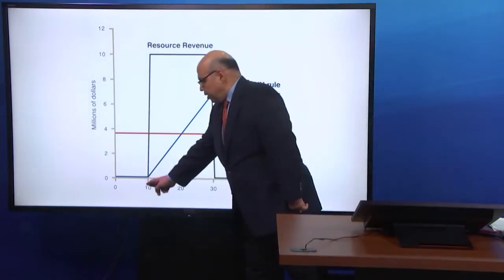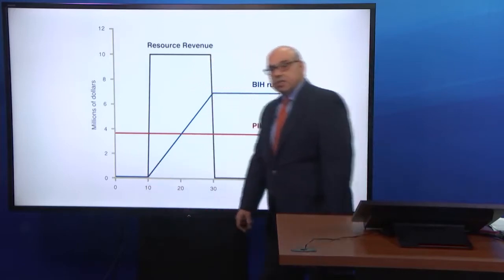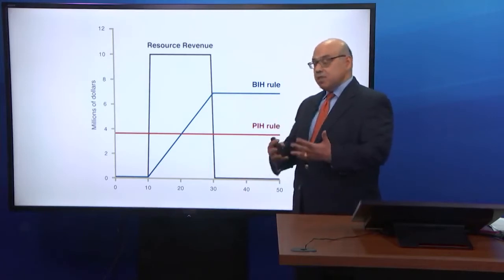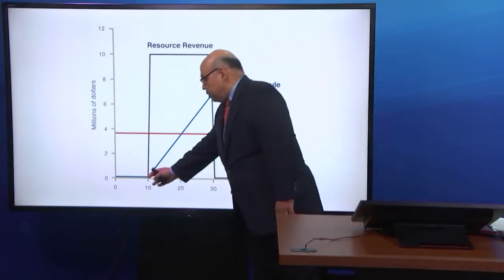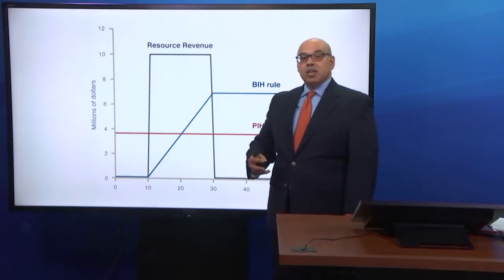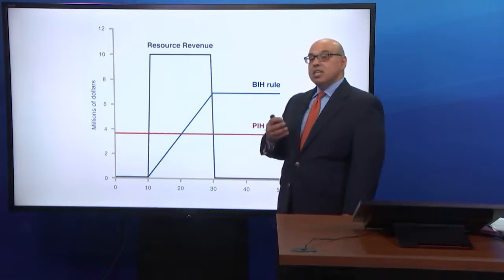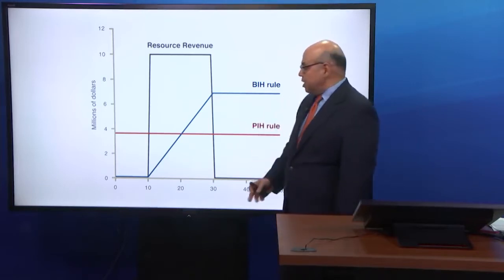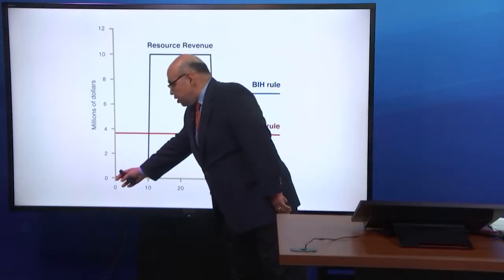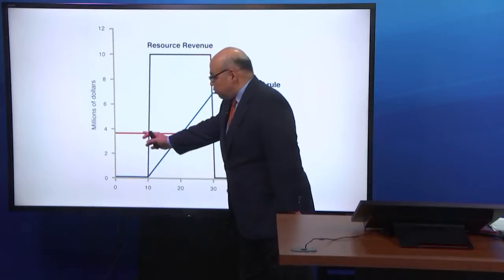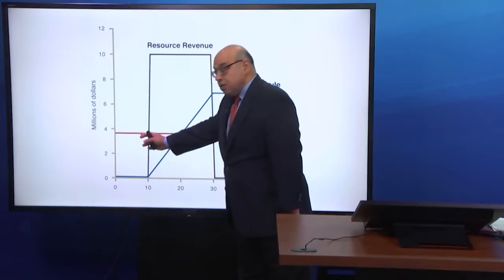Looking at the first segment, during these first 10 years the government is not collecting anything from resources in the ground, so it has zero resource revenue. BIH says you can only spend the interest you earn on your asset holdings from accumulation of financial assets, but they're not accumulating anything. As a result, any interest rate times zero will be zero, so the government is not using any resource revenue during this period. In contrast, under PIH, government is spending something — in this case close to four million — because it's borrowing.